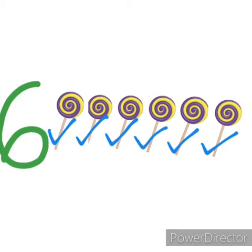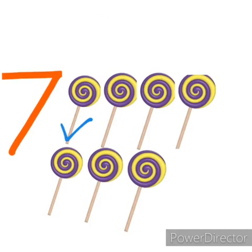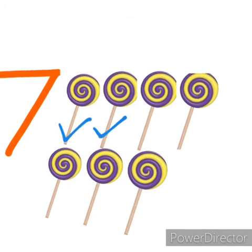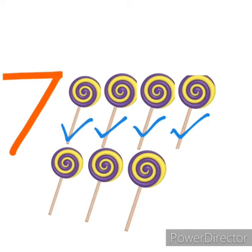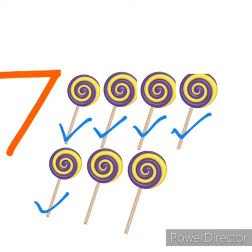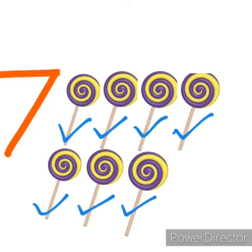After 6, which number? Number 7. So number 7, let us count 7 lollipops. 1, 2, 3, 4, 5, 6, 7. 7 means 7 lollipops. Right?